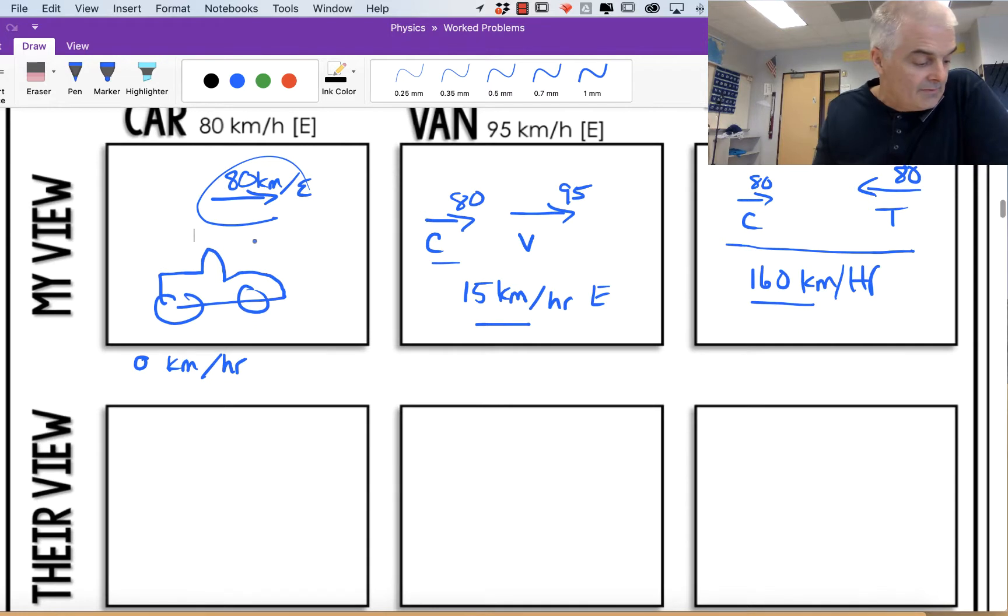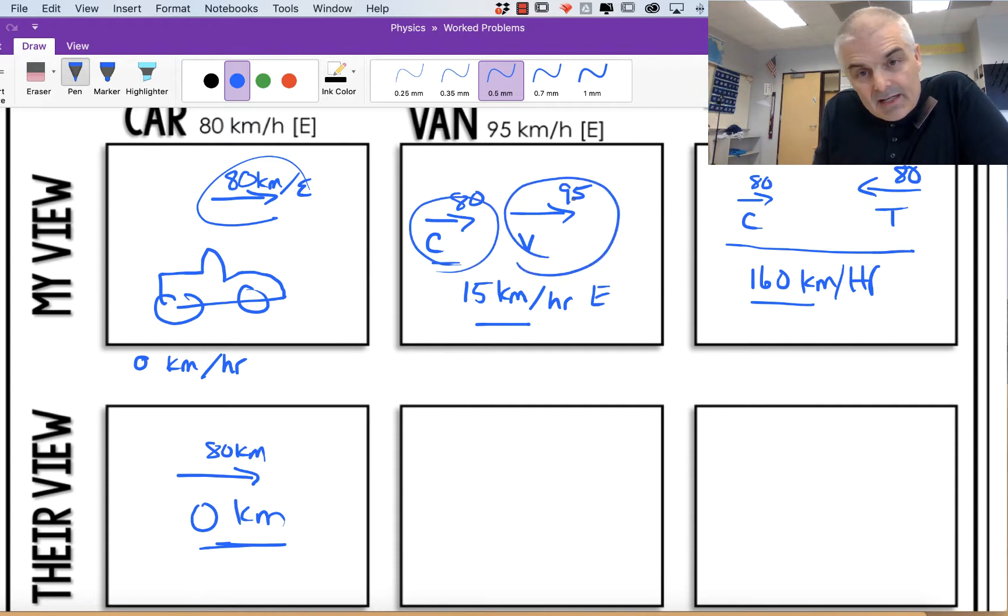But now let's take a look at the view of the opposite side, their view. The car is going 80 kilometers, but from my perspective in the car, it's zero kilometers because I'm still. But what about from the perspective of the van? The car is going 80, the van is going 95, but he feels like you're going away to the left. So this one feels like you're going 15 kilometers per hour to the west, or you might even say negative 15 kilometers per hour to the east.